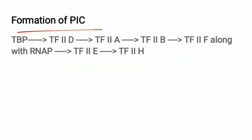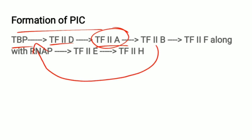Formation of the pre-initiation complex involves a series of steps. First, the TATA-binding protein — which is part of transcription factor 2D — attaches to the TATA box. Then transcription factor 2A attaches, which stabilizes the association of transcription factor 2B with the TATA-binding protein. Then transcription factor 2F comes along with RNA polymerase. Then transcription factor 2E and finally transcription factor 2H are added.